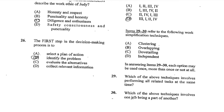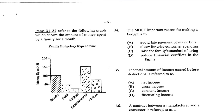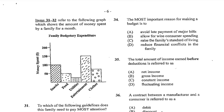Items 29 to 30 refer to the following work simplification techniques. In answering items 29 to 30, each option must be used once, more than once, or not at all. Number 29. Which of the above techniques involves performing all related tasks at the same time? That would be C, dovetailing. Number 30. Which of the above techniques involves one job being a part of another? That would be B, overlapping. Remember, dovetailing is like multitasking where several tasks are going on at the same time. Overlapping is where one task becomes a part of the other as they both require different levels of attention — for example, watching television and crocheting at the same time.